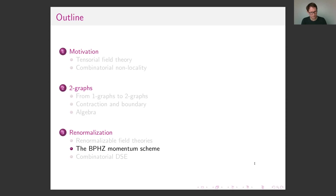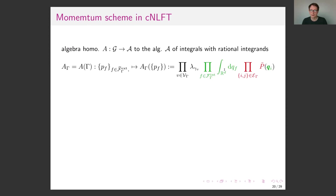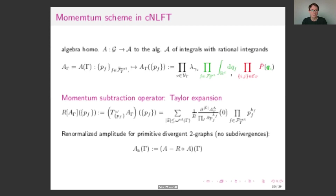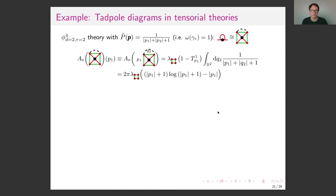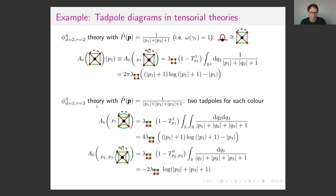Let me briefly tell you how to compute with this structure. The amplitude map evaluates diagrams, and in the BPHZ momentum scheme you have a subtraction operator given by a Taylor expansion of order equal to the divergence degree. For primitive divergent two-graphs — those with no sub-divergences — you renormalize simply by subtracting the Taylor expansion. As an example, the tadpole in a matrix theory gives some function of the log after subtraction.